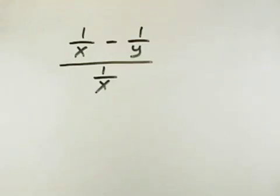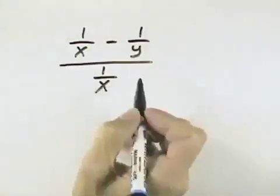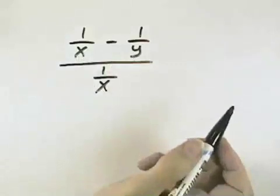Here we have a complex rational expression that we want to simplify. To do that, I'm going to multiply through the numerator and the denominator by the least common denominator of the small fractions within this.